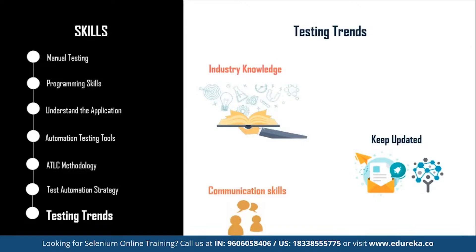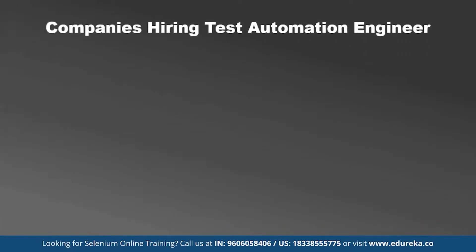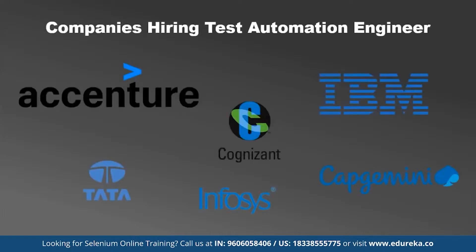Once you have mastered these skills, you are on your way to becoming a successful software test automation engineer. Some of the top companies hiring test automation engineers are Accenture, IBM, Cognizant, Infosys, TCS, and Capgemini. Keep an eye out for opportunities and utilize your skills to grab the offer.